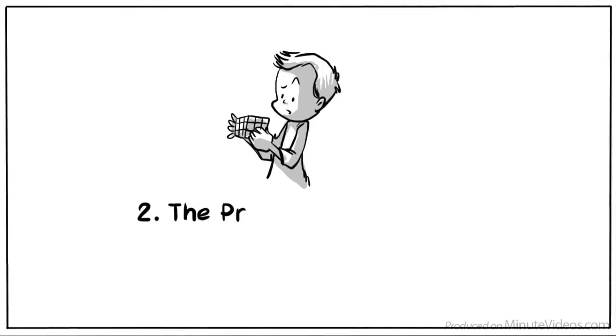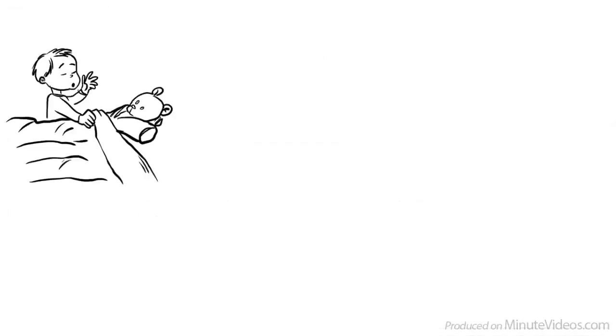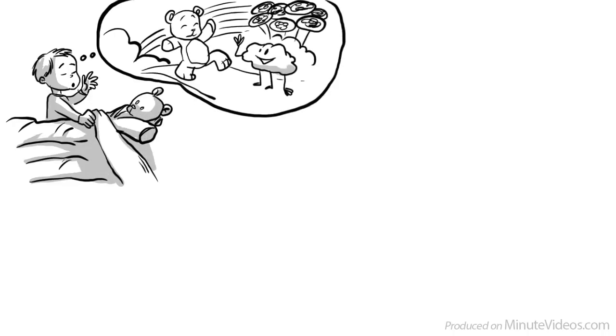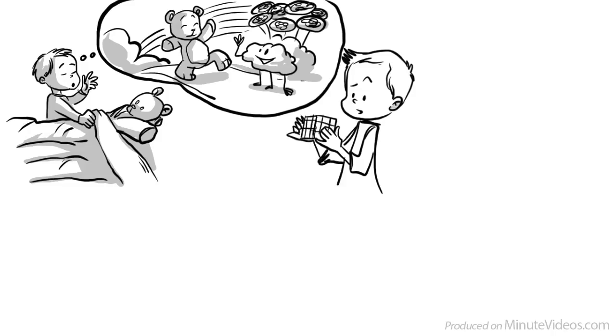Two, the pre-operational stage, ages two to seven. Our thinking is mainly categorized through symbolic functions and intuitive thoughts. We have lots of fantasies and believe objects are alive. As we are not able to apply specific cognitive operations, Piaget calls this stage pre-operational.